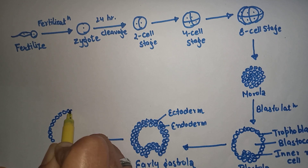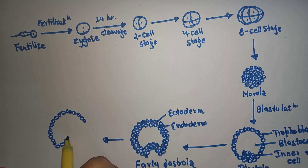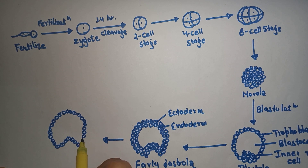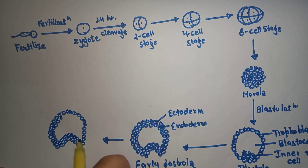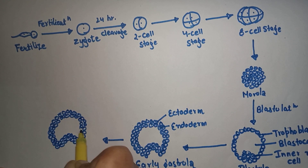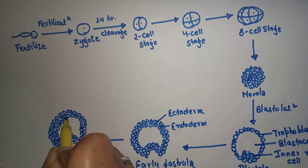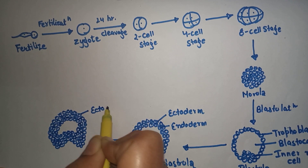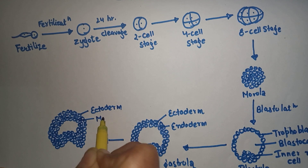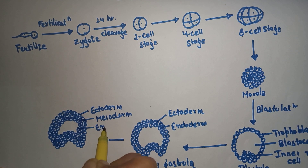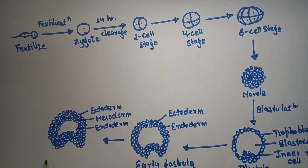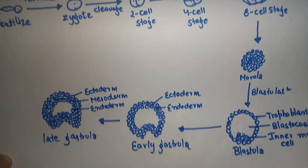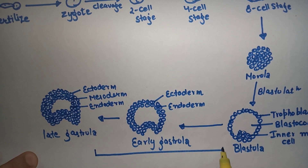Early gastrula leads to late gastrula. Both are similar but the difference is that early gastrula has two germ layers while late gastrula has three germ layers. The middle one is the mesoderm layer and the inner one is the endoderm layer. This is the late gastrula.